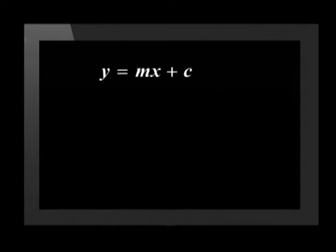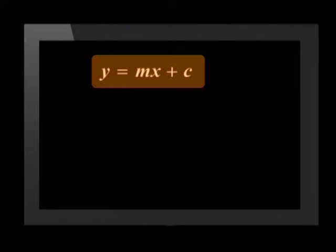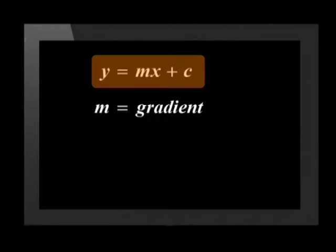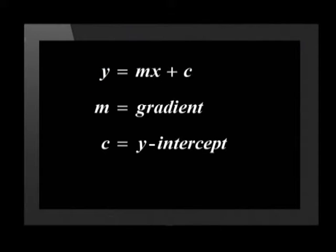The gradient is often used to find the equation of a straight line. The formula for a straight line is y equals mx plus c. m is the gradient and c is the y-intercept.